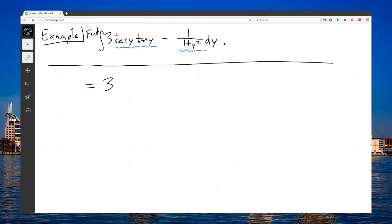Just bring down the constant multiple three. Secant y tangent y, that's the derivative of secant. Bring down the minus. 1 over 1 plus y squared is the derivative of inverse tangent plus c. Now there's possibly many ways to figure this out besides what I just did. You could actually reprove all of this, but you don't have time to reprove to do all the little details. You need to be able to recognize this is a known derivative.